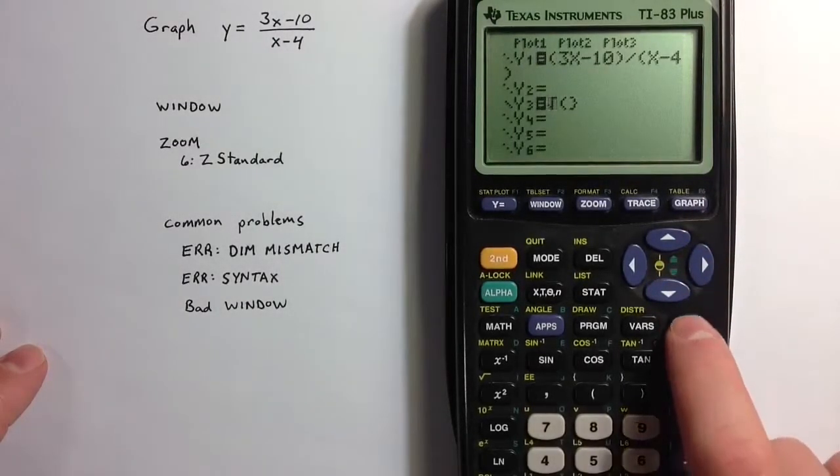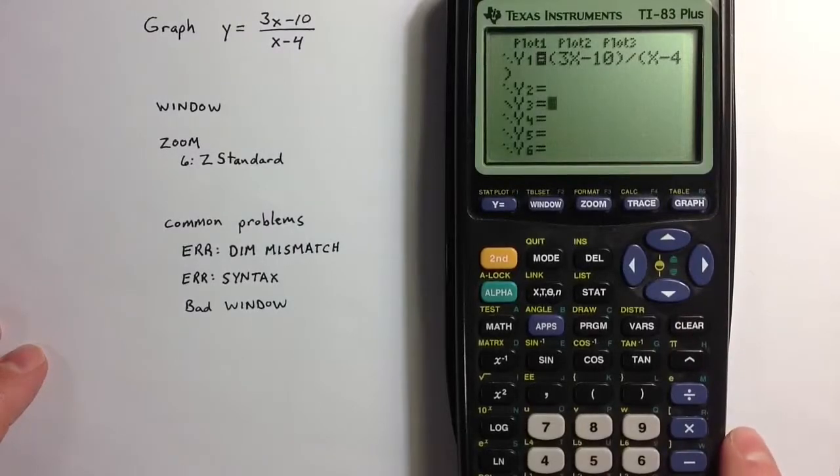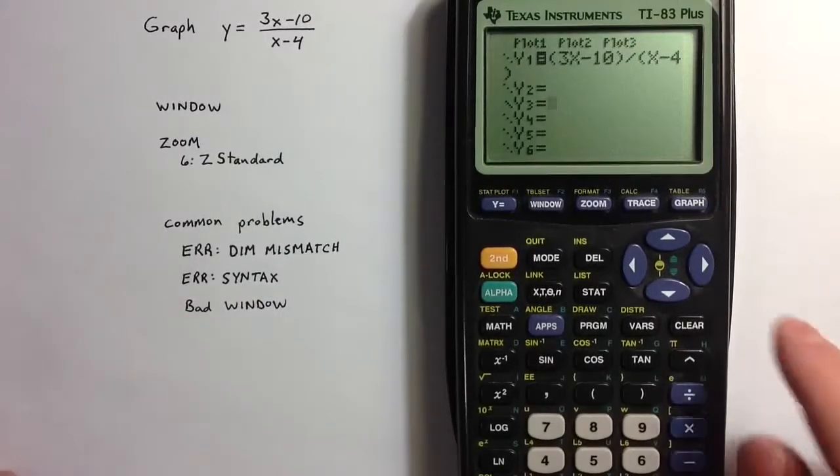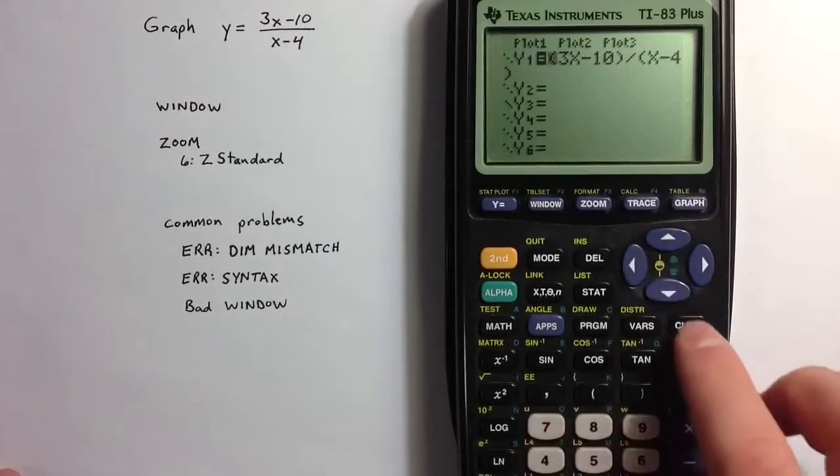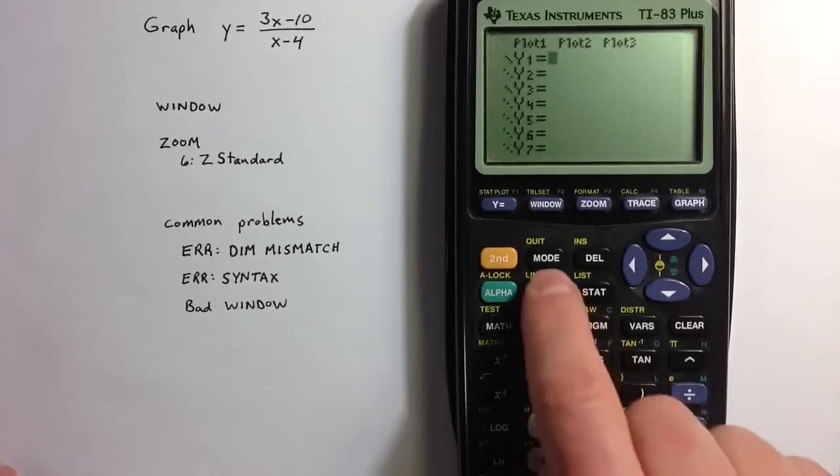Hitting clear will get rid of an expression from the y equals menu. What I mean by bad window is that you may try to graph something and it may just not appear at all. For example...